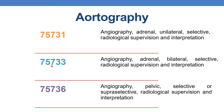The next code is 75733 — angiography, adrenal, bilateral. So 75731 is angiography, adrenal, unilateral, whereas 75733 is angiography, adrenal, bilateral. Next, 75736 — angiography, pelvic, selective or supra-selective, radiological supervision and interpretation.